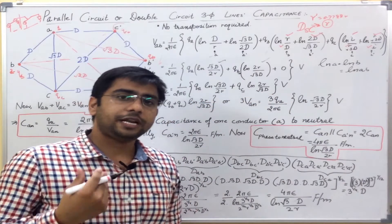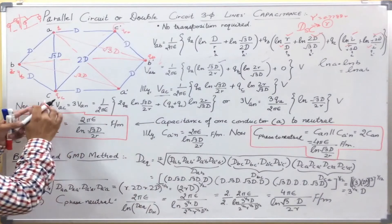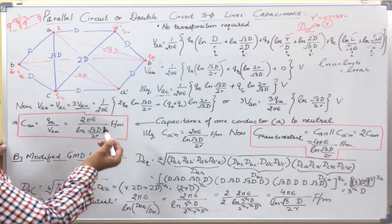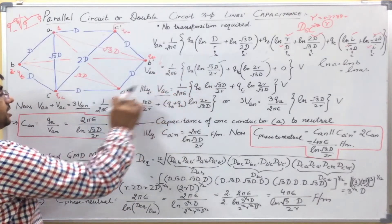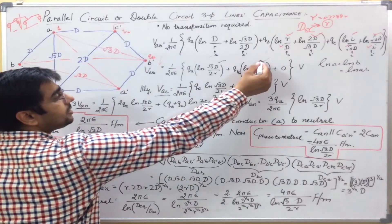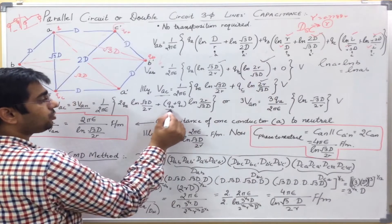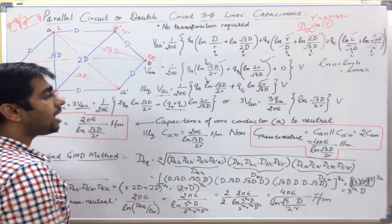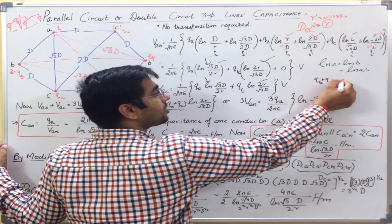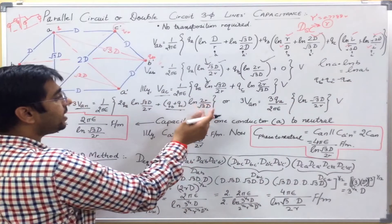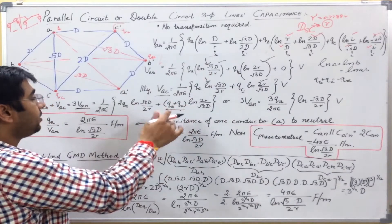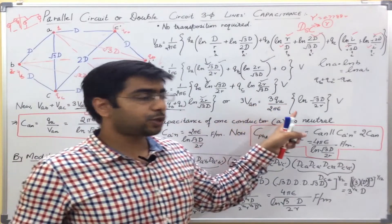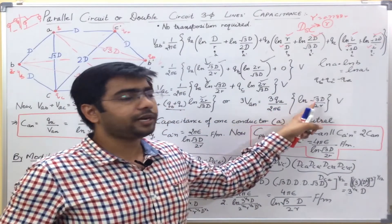As we have seen in previous lectures, V_AB + V_AC = 3 V_AN. Putting V_AB and V_AC equal to 3 V_AN, I see this term is common, so Q_B + Q_C will factor out. Using Q_B + Q_C = −Q_A, the minus sign is taken inside and the log term gets inverted. In this way, this gives me: 3 V_AN = (3 Q_A / 2π epsilon) × natural log(root 3D / 2R).